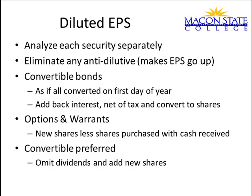For options or warrants, when they're exercised, the holder typically gives you cash and you give them new shares. So there would be no impact on earnings or net income — there's no expense related to that. The numerator would be the same, but the denominator would have some new shares. You remove from the new shares however many shares you could buy back with the cash they gave you. For convertible preferred, if dividends were declared or if it's cumulative, you remove those dividends from the numerator and add the new shares they converted into in the denominator.